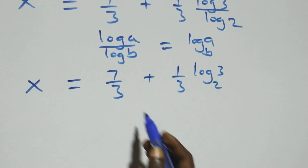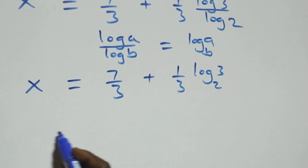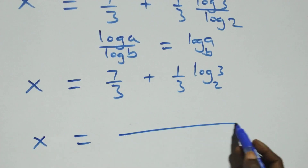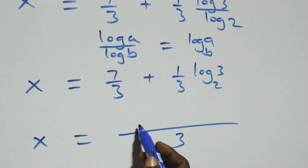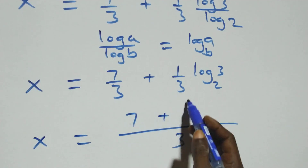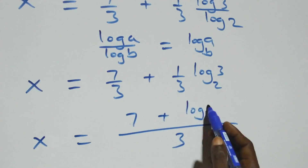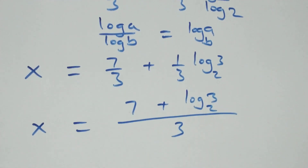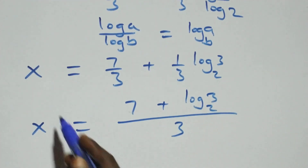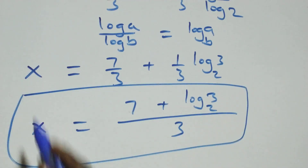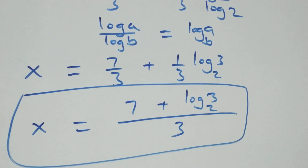Bringing this together as one fraction with denominator 3, we get x equals 7 plus log 3 base 2, all over 3. That is the value of x.